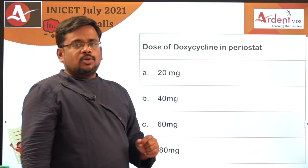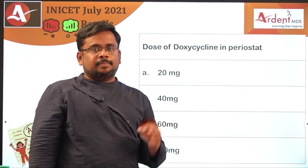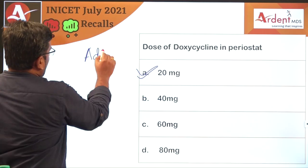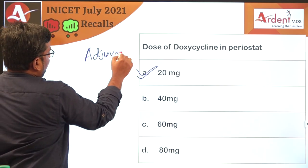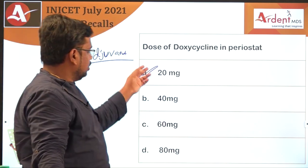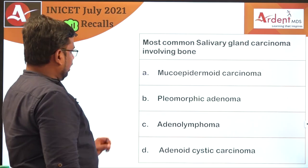One more question from perio: what is the dose of doxycycline in Periostat? Periostat contains doxycycline at a dose of 20 milligrams. This is a direct pick question. Doxycycline acts as an adjuvant in scaling and root planing for the treatment of periodontitis. So the answer is 20 milligrams.